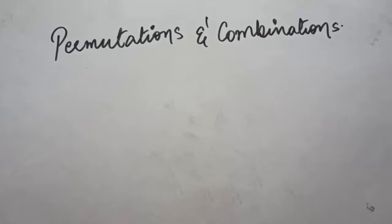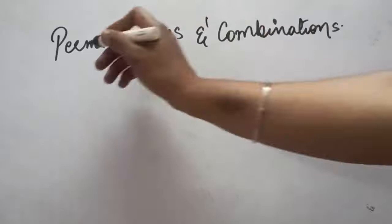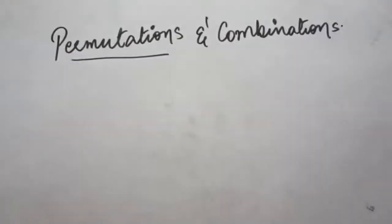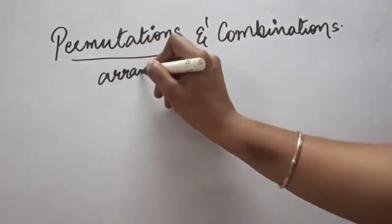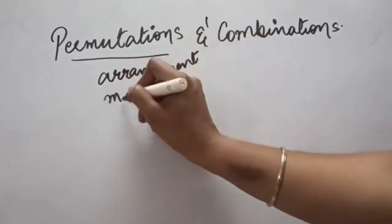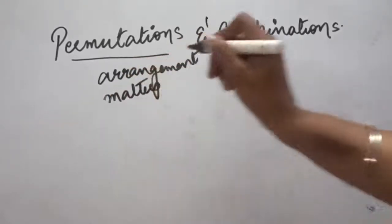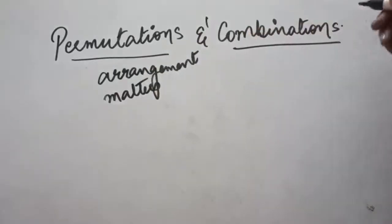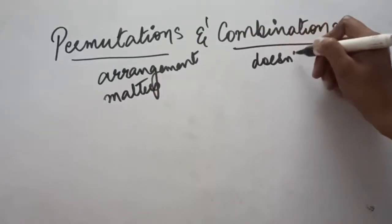Sometimes the counting becomes complicated depending on the way things are being arranged when there are N number of things, and combinational analysis helps a lot. In this video, we will start with the concept of permutations. The concept of permutations is applied in questions where arrangement matters, while combinations are applied where arrangement does not matter.